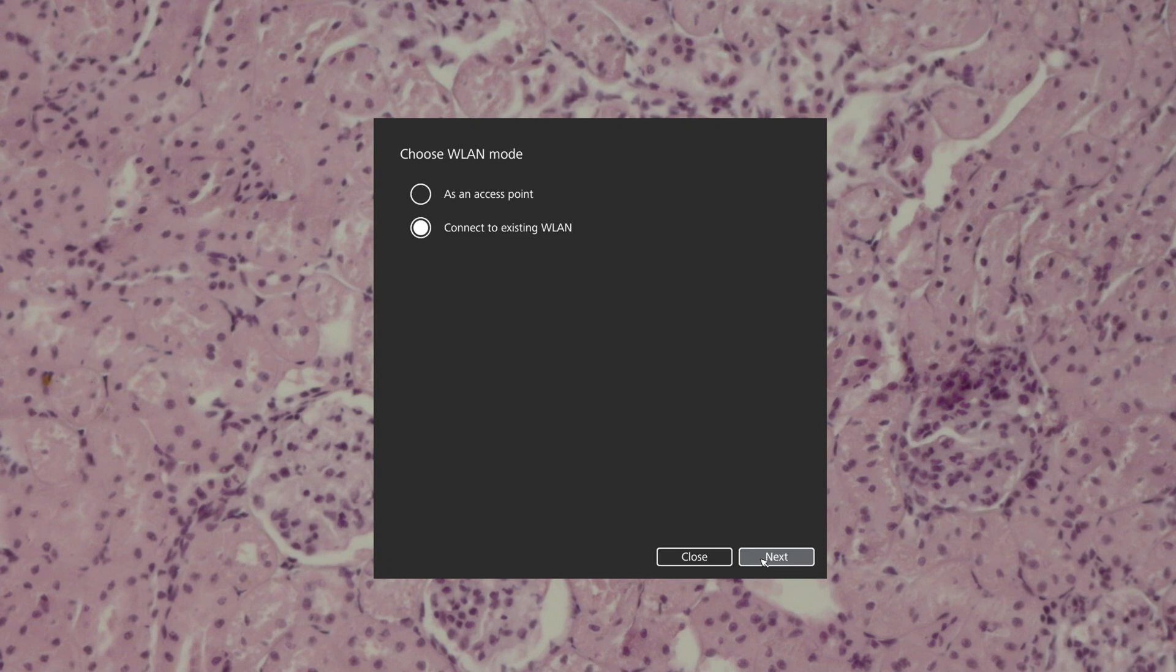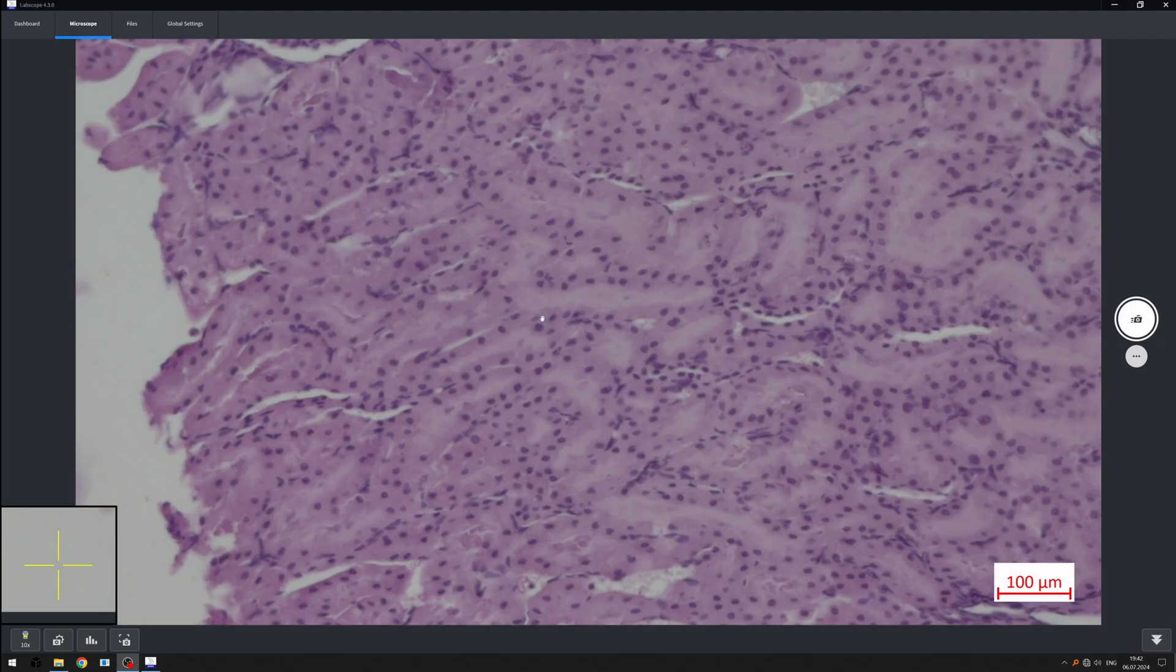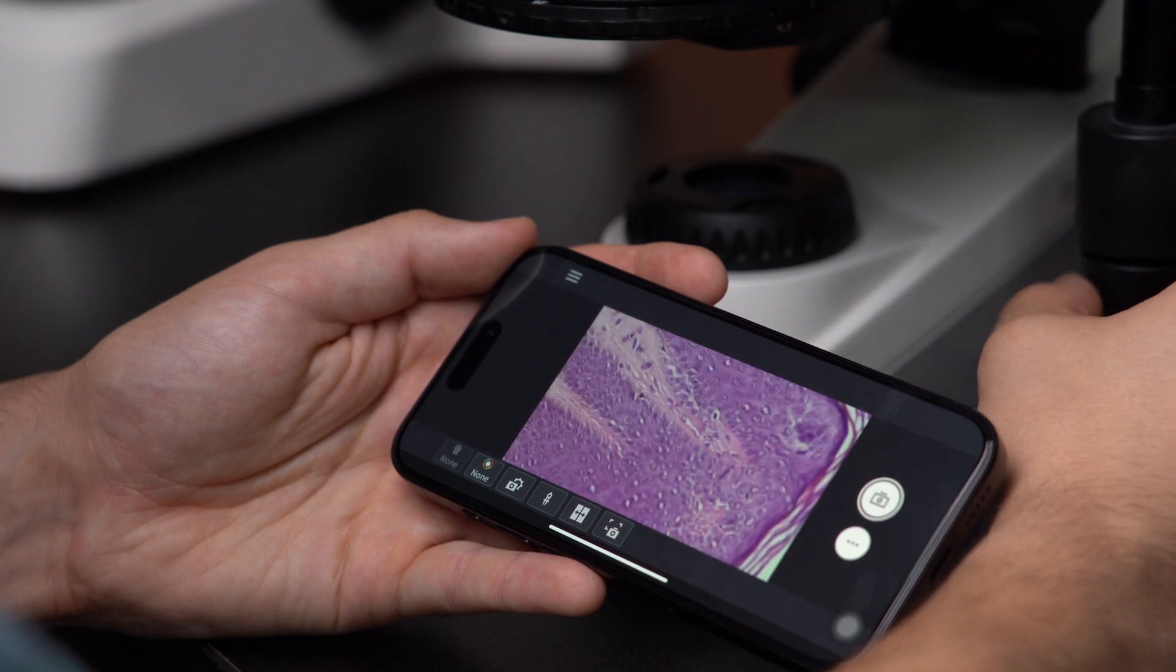In the Wi-Fi settings menu, we can connect the Axiocam camera to our local network. Select the network and enter the password. Now it should work. Disconnect your camera from the monitor and open the Labscope app. We're here. Now you can connect to the camera from any device on the local network.